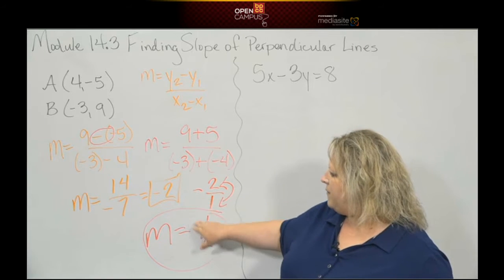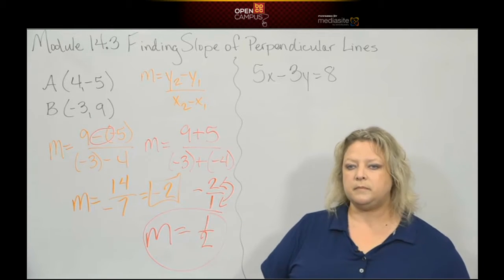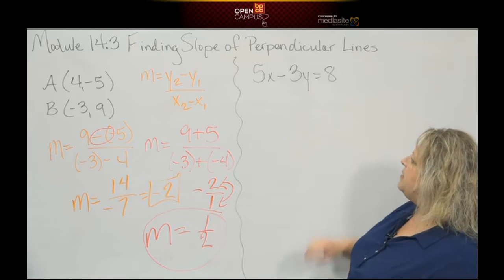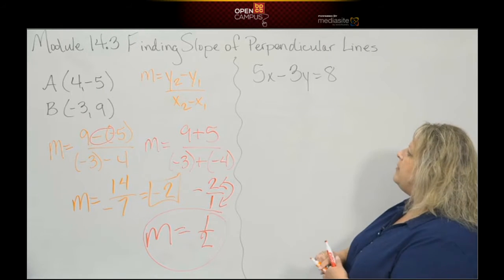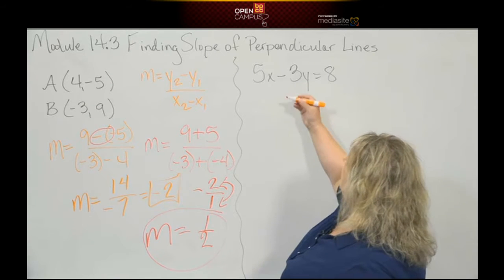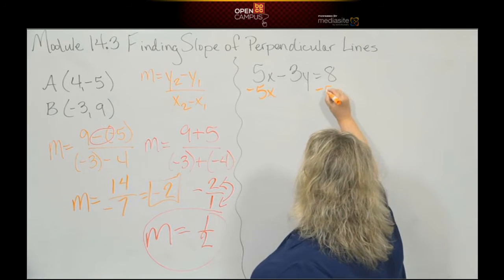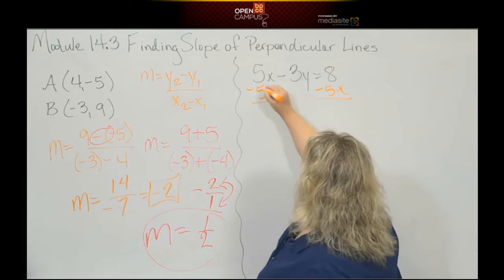Okay, now let's try this one. So this is our line that's in standard form, and let's put it in slope intercept form so we can find the slope that's hiding in there. So let's move that 5x over by doing the opposite, which is subtraction.